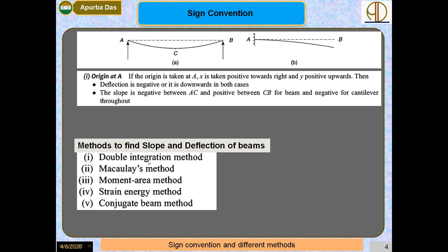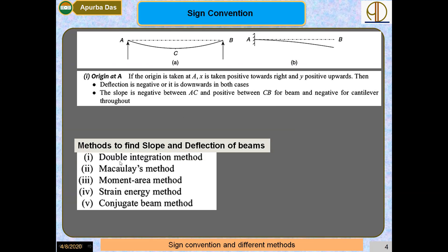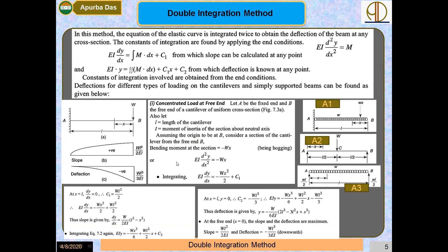In this video we will discuss the double integration method. In this method, we start with the equation of the elastic curve: EI · d²y/dx² = M. We integrate this once to get the slope, and integrate again to get the deflection.